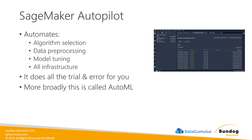Basically, SageMaker Autopilot is going to do all that trial and error for you. You say: here's my problem, here's my data — go figure out the best way to build a model around this data and problem set. That's SageMaker Autopilot, just a wrapper around what we call AutoML.